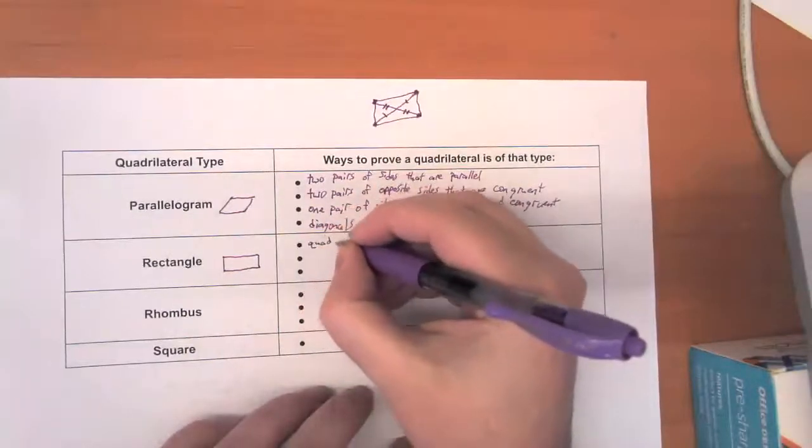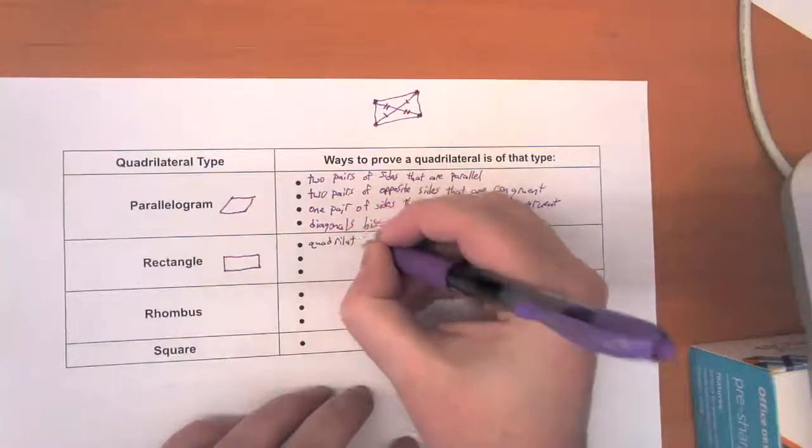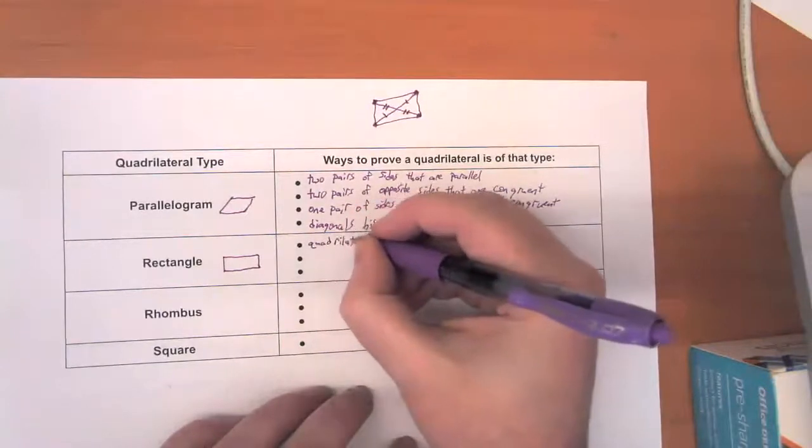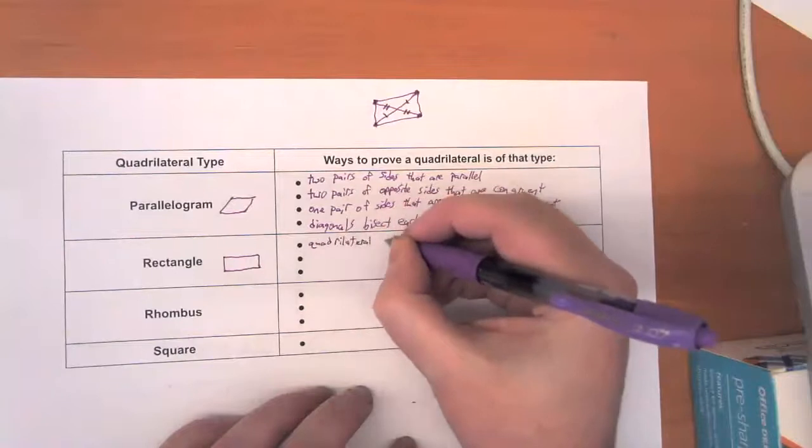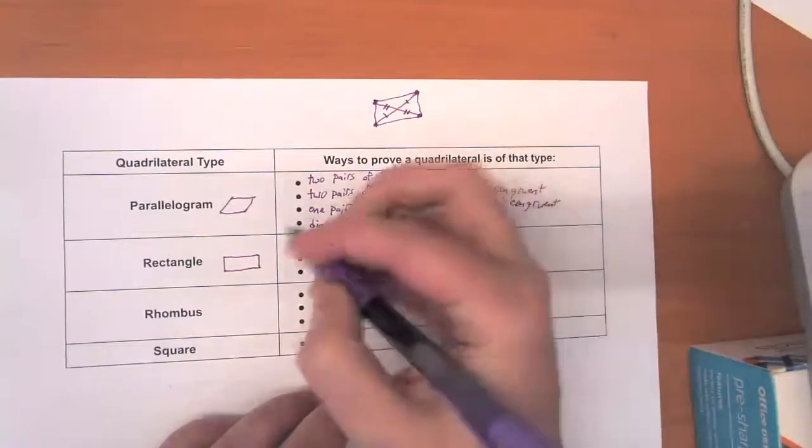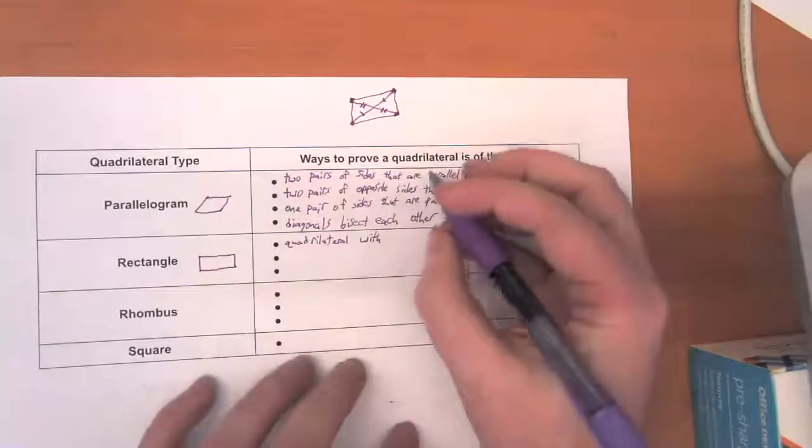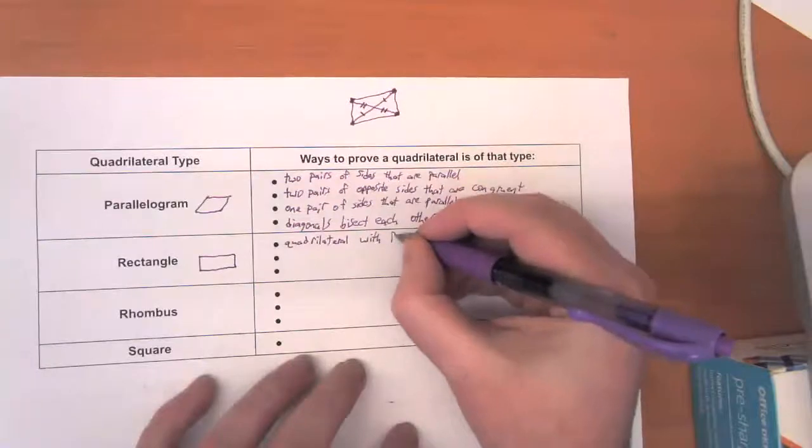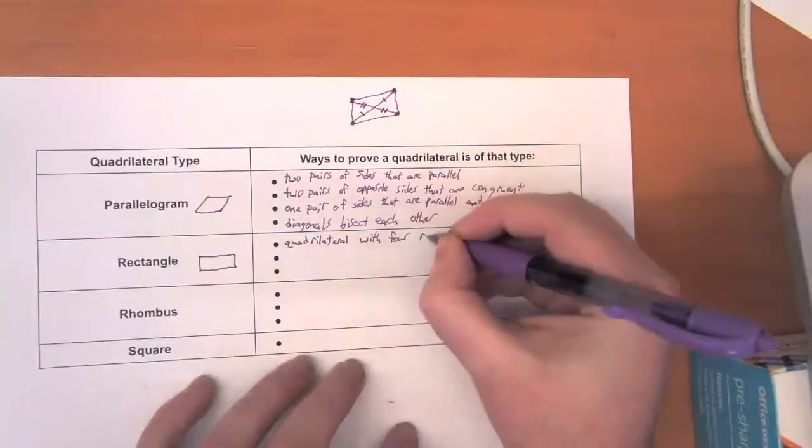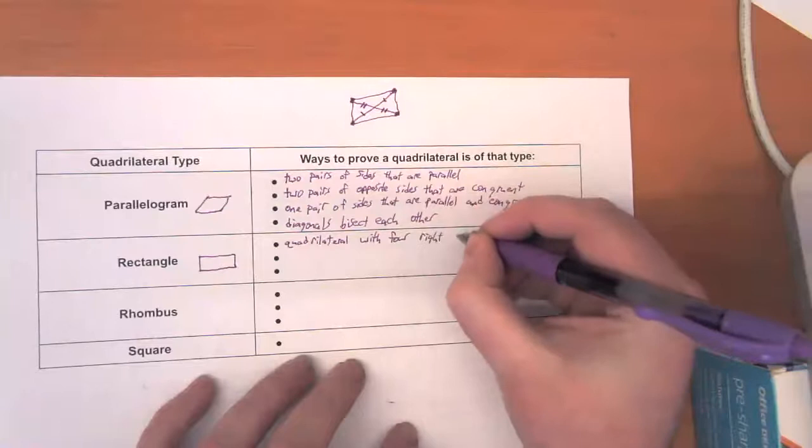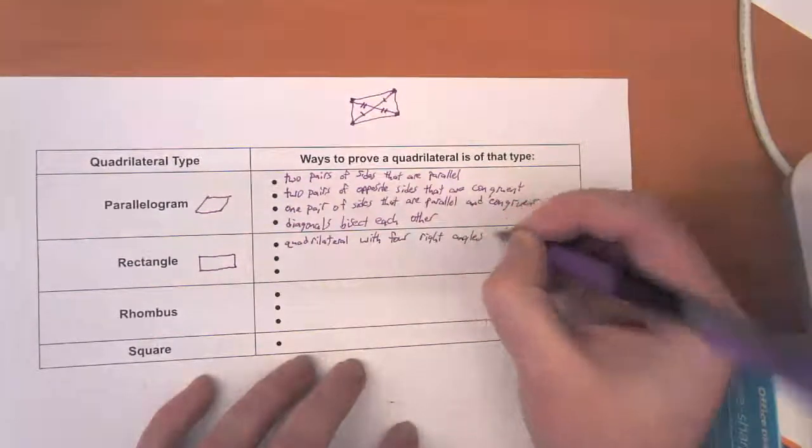What is it that makes rectangles kind of rectangular? Well, what it is, is it is a quadrilateral with the thing that makes this special is that those angles are all right angles. Four right angles.